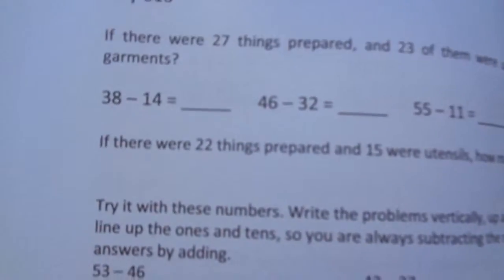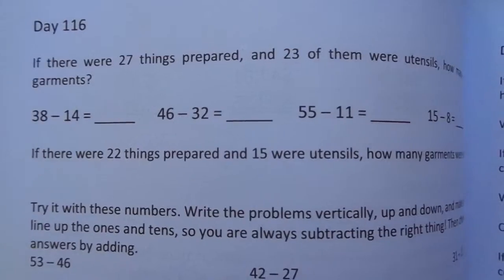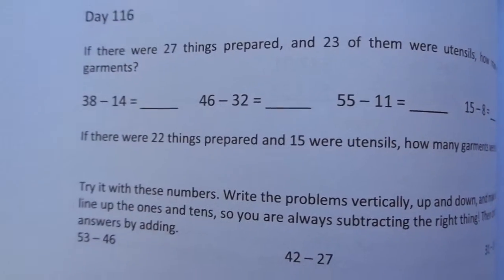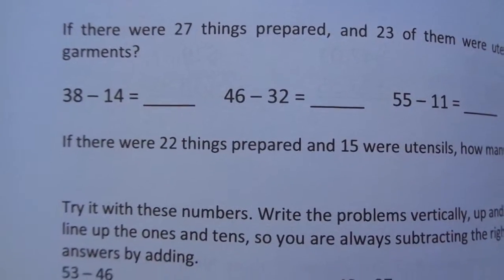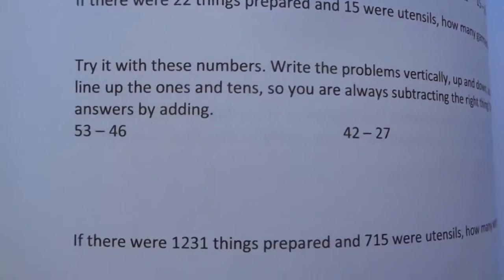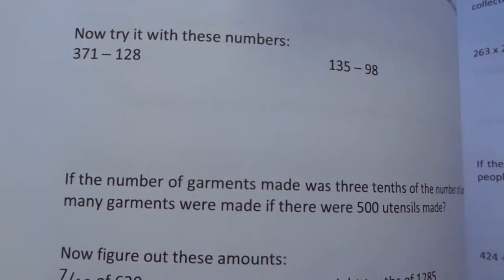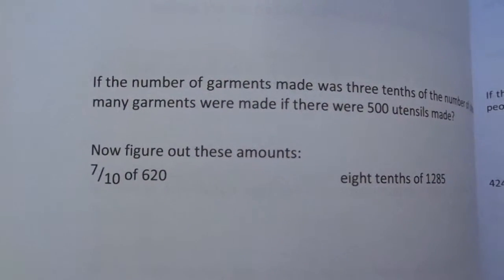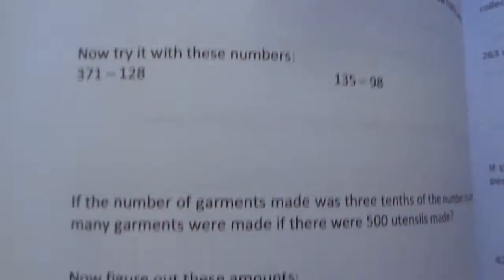So we're talking about things prepared for the tabernacle. There were 27 things prepared, and 23 of them were utensils. How many were garments? So these are the easy Level A problems, and then the Level B problems, and then the Level C problems. And then they're going to do it with their problems. So it gets harder as they work on the page.